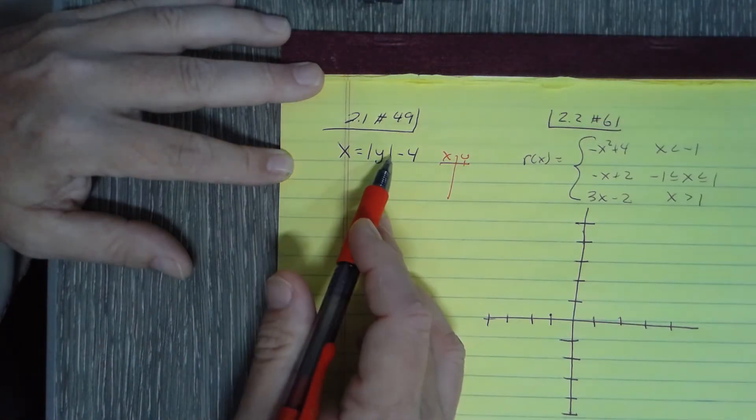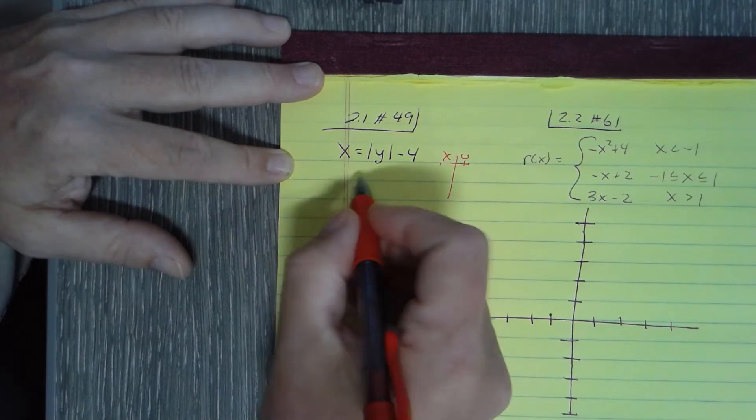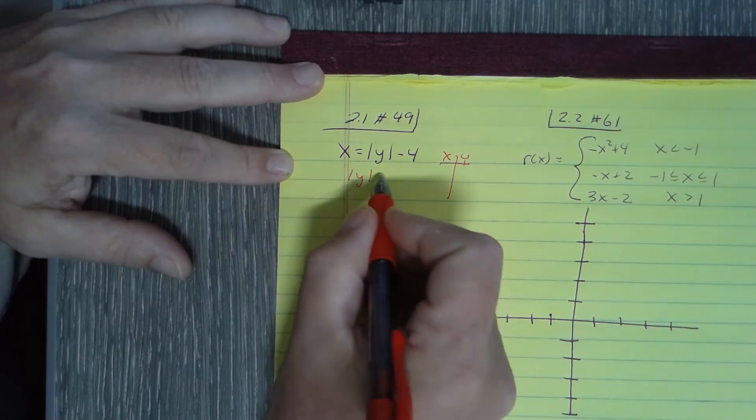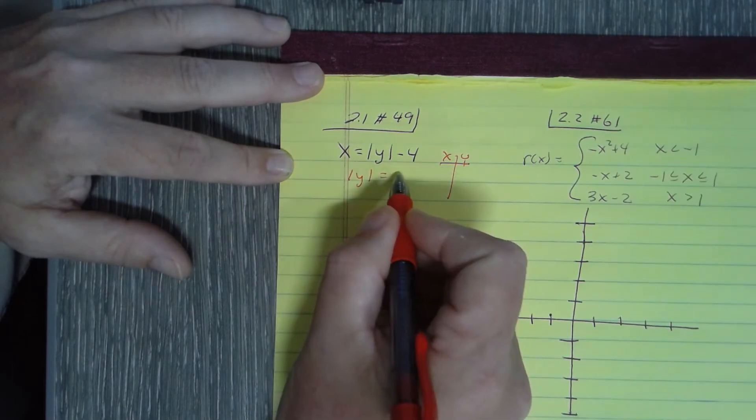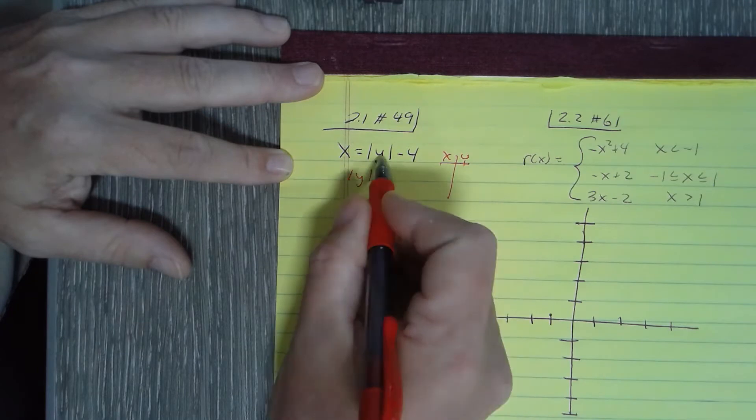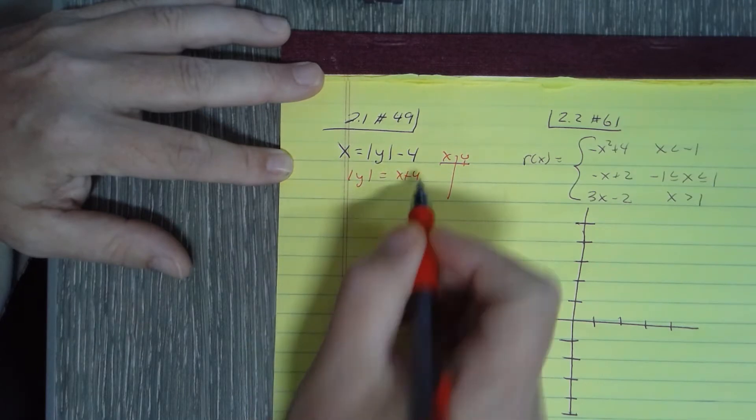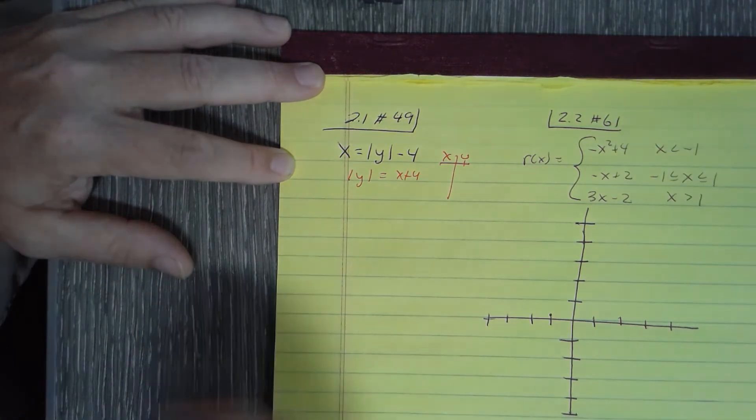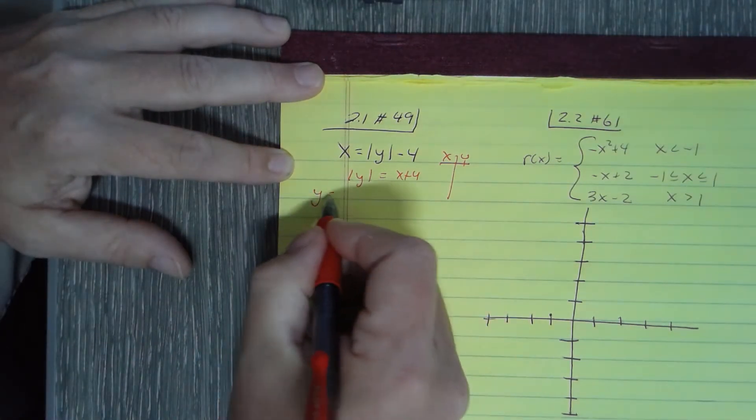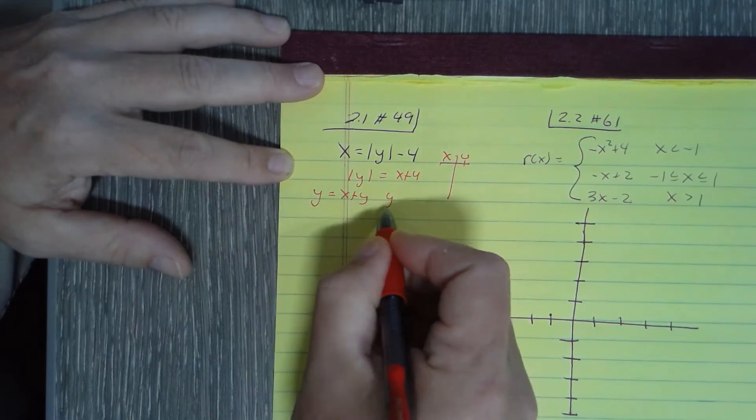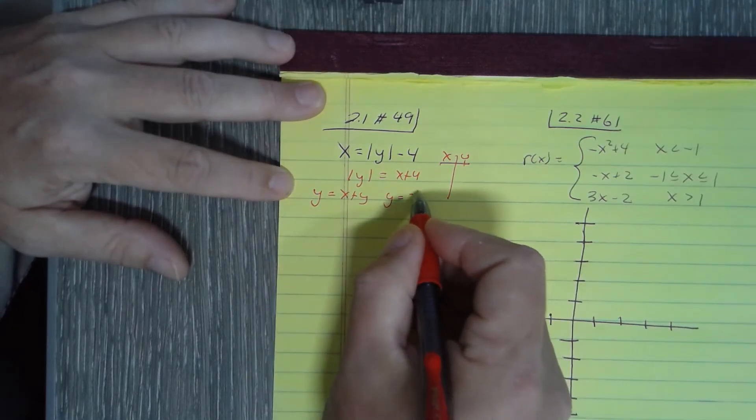So the absolute value of y is going to equal x plus 4. With absolute values, I have to write it twice. I write it first time by dropping it, y equals, then I negate the opposite side.